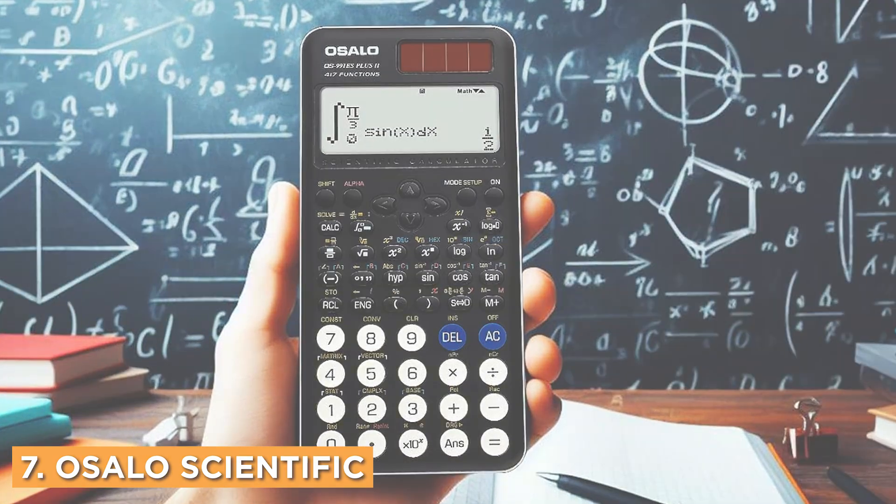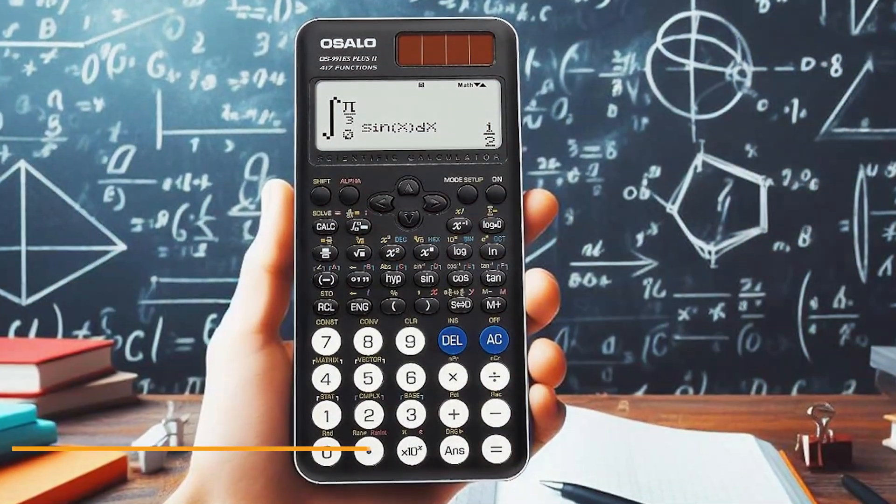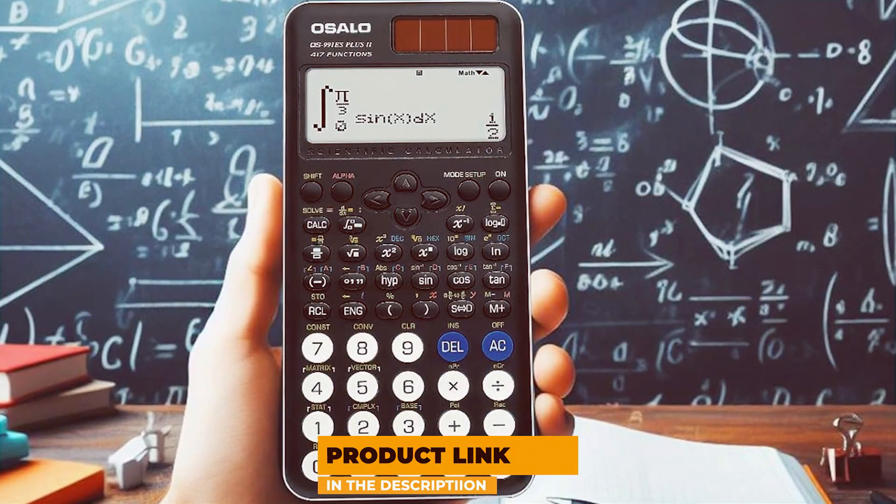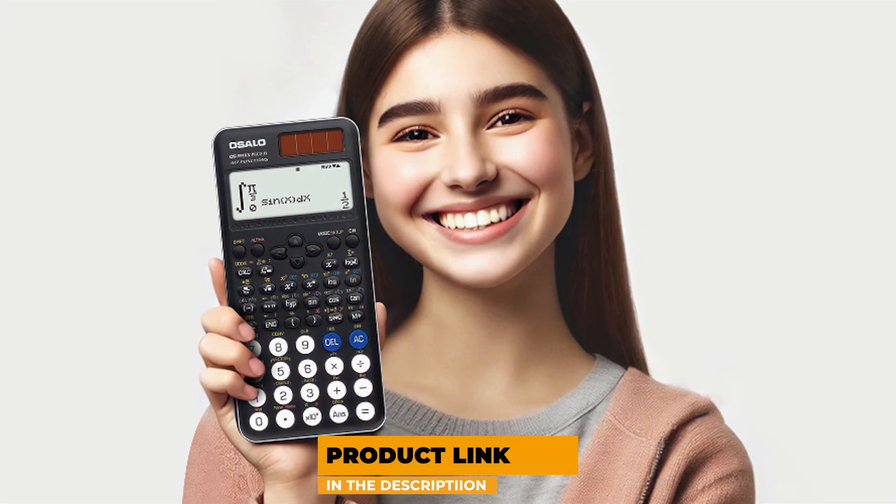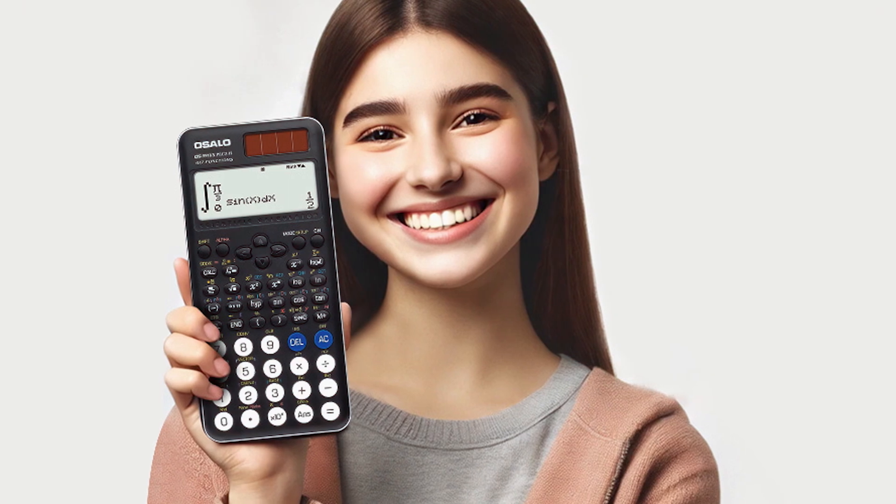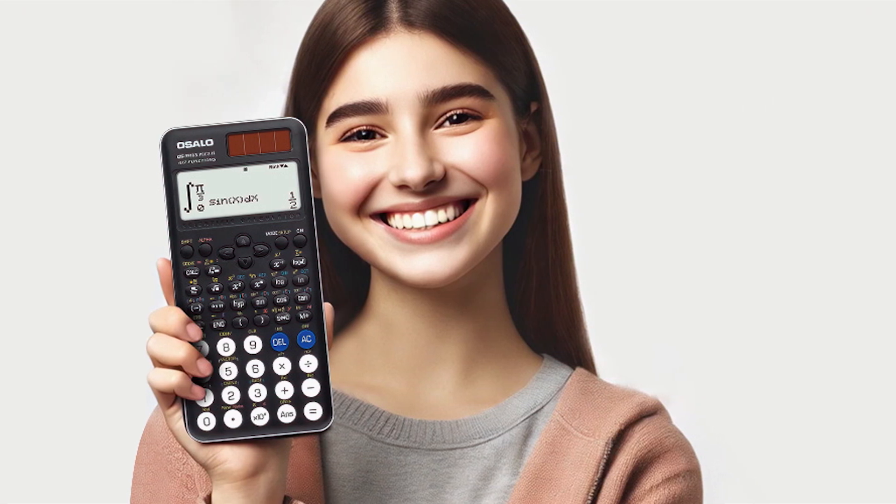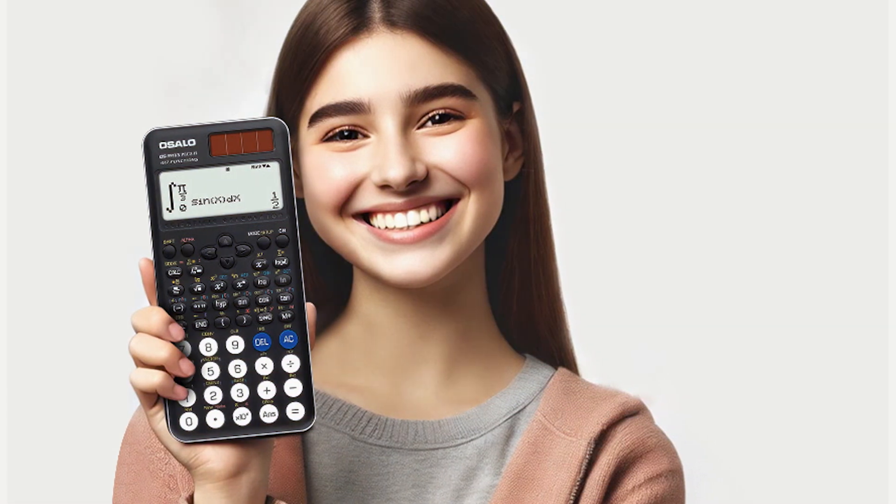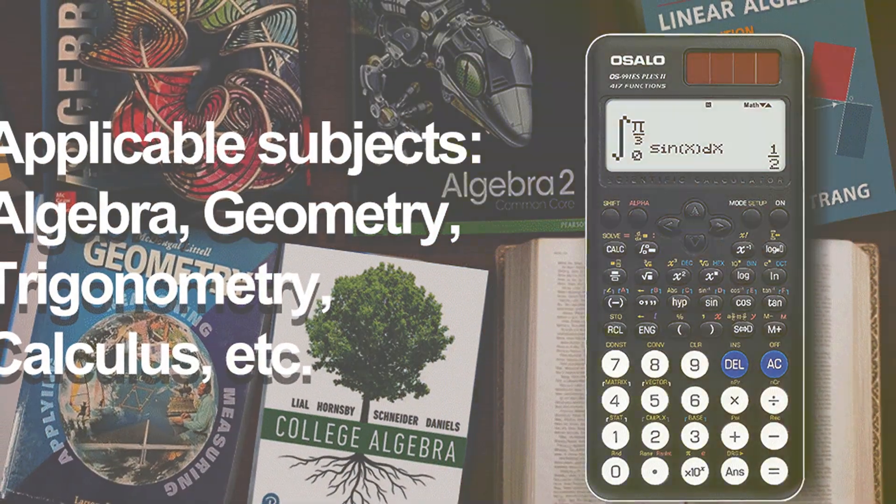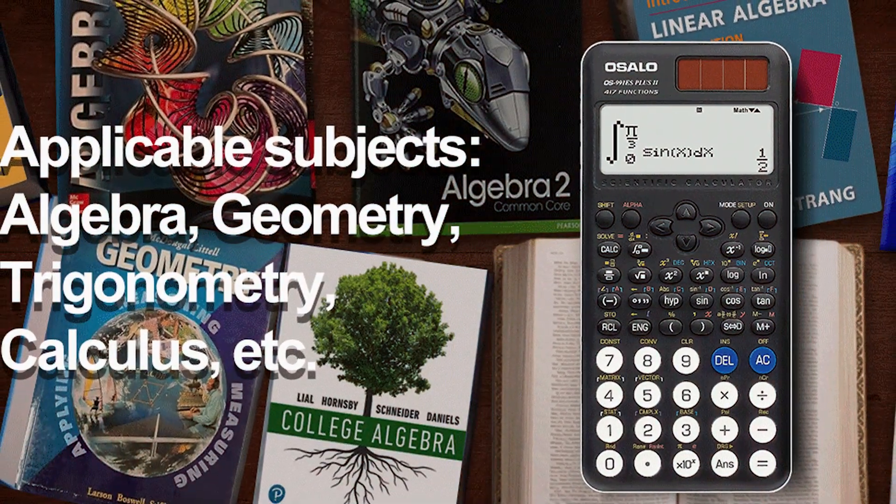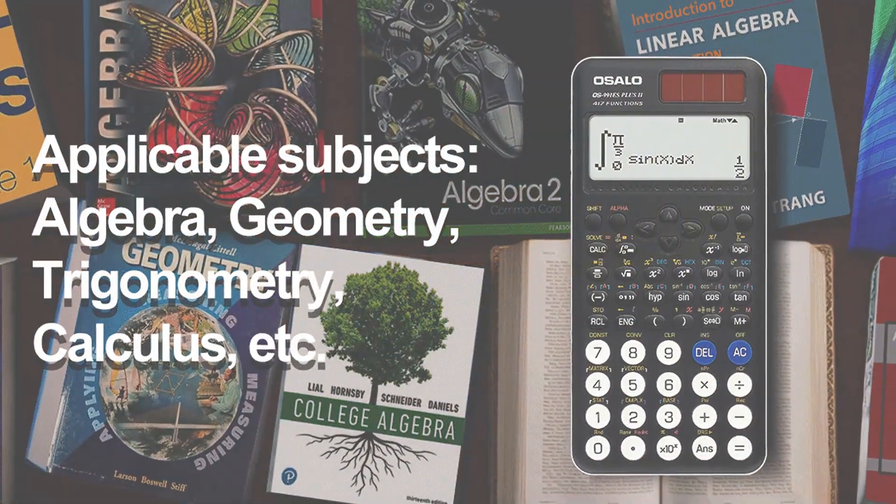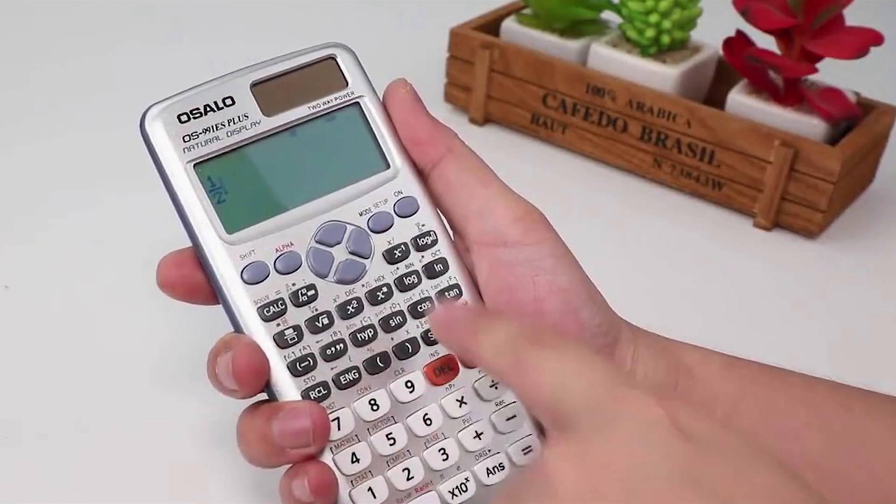Number 7: OSALO Scientific Calculator, which boasts a robust design and an impressive array of functions. The calculator features a large 10-plus-2 digit display that ensures clear visibility of calculations, even for complex equations. Its user-friendly interface is designed with students in mind, providing easy access to essential functions without overwhelming users with unnecessary complexity.